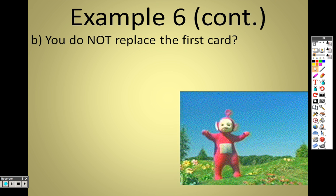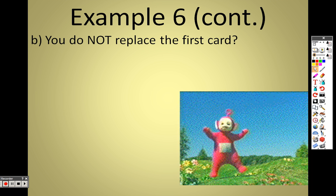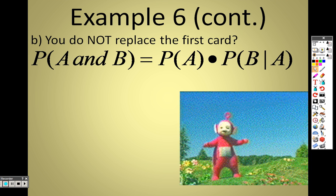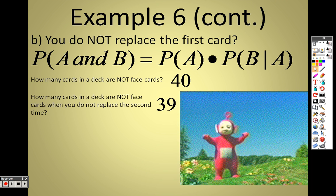Continuing that, it says, you do not replace the card. Now, since we're talking about do not replace, that means we're talking about dependent events. It's conditional on another one. So, what that means is, there are 40 cards that are not face cards. 40 out of 52. And the second card now is 39, and let me explain why this happens.